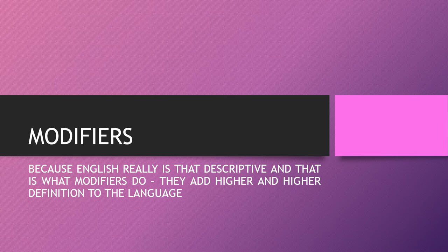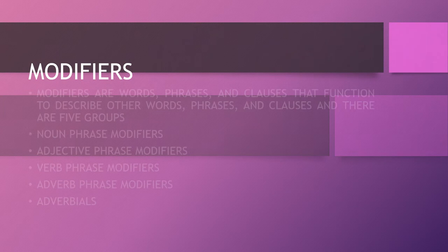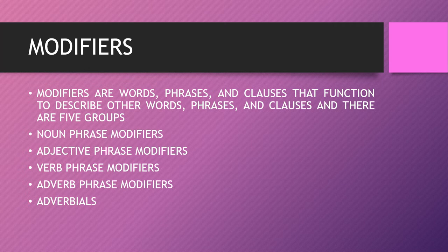We're going to be taking a look at modifiers, which is a fancy expression, but you'll see as we go through that many of these are already familiar to you. All that we're doing is adding the technical terms to things that we're going to use. What they're doing is adding definition to the language — English, after all, is the most descriptive language. Simply put, modifiers are words, phrases, or clauses that function to describe other words.